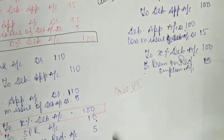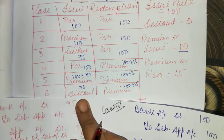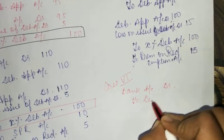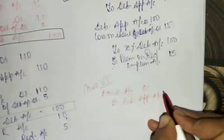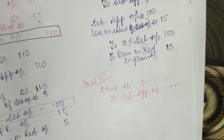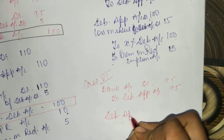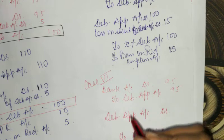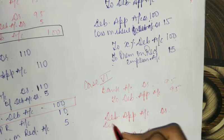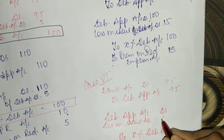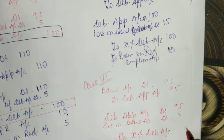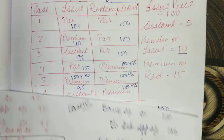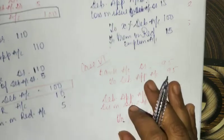Case 6 — we are issuing at discount. We issue at 95. Bank Account Dr. To Debenture Application Account — 95. Then Debenture Application Account Dr. To X% Debenture Account — and also Discount on Issue Account Dr. — 5 rupees, so 95 plus 5 equals 100. Now we check the X% debenture: here it is 100, but we have to pay 115. So here again we need to open a special account.